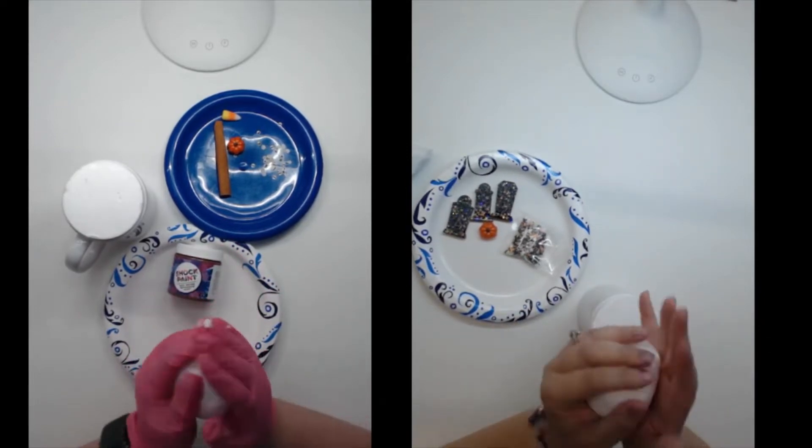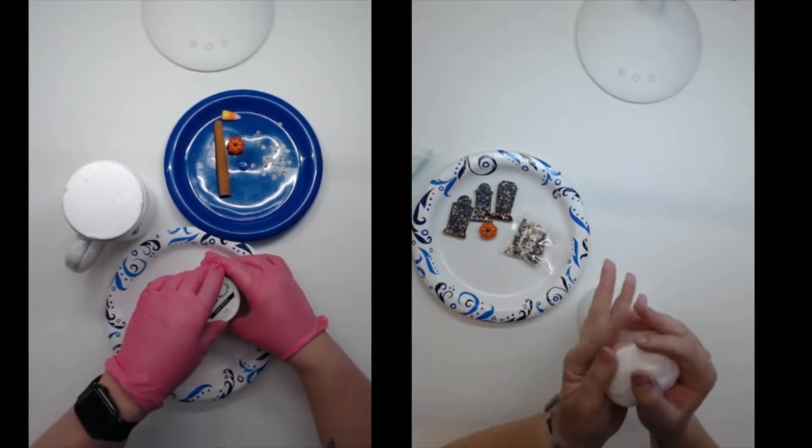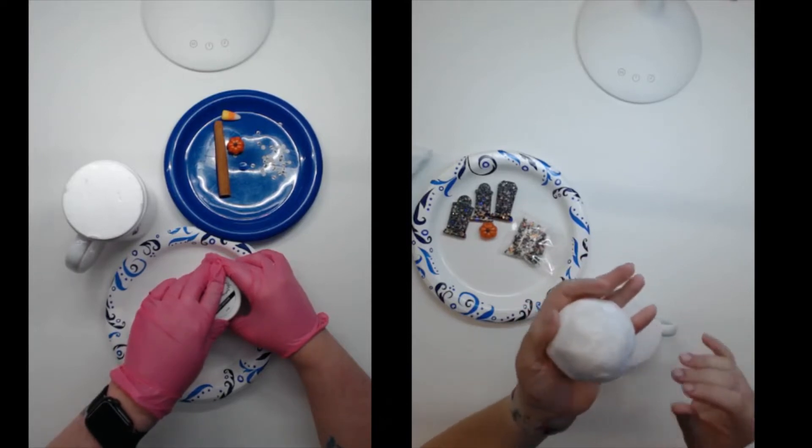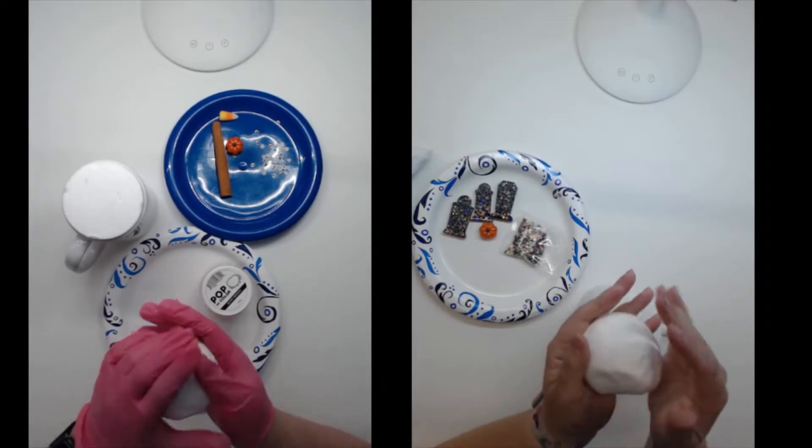So like I said, you just get your little ball and then once you get a good ball, you kind of start forming the top of it to make it look like a little whipped cream top on the top there. Get that little peak going.